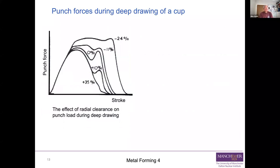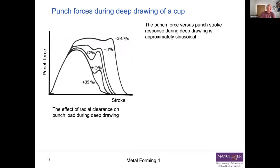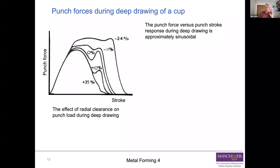As you might expect with such a complex deformation process, it's also a complex loading process. The punch force versus punch stroke response during deep drawing is approximately sinusoidal - you don't need to explain that, but broadly speaking that's what you get. However, it is significantly affected by how much radial clearance there is between the punch and the die.